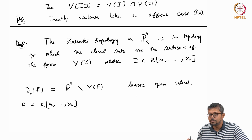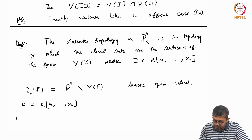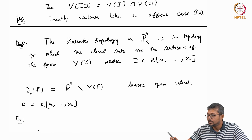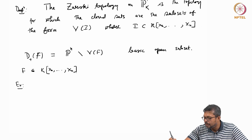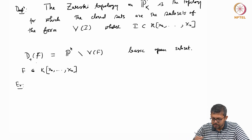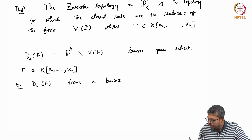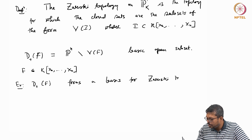These open subsets — like in the affine case, you can see that they form a basis. This D+(f) forms a basis for this topology, forms a basis for the Zariski topology.